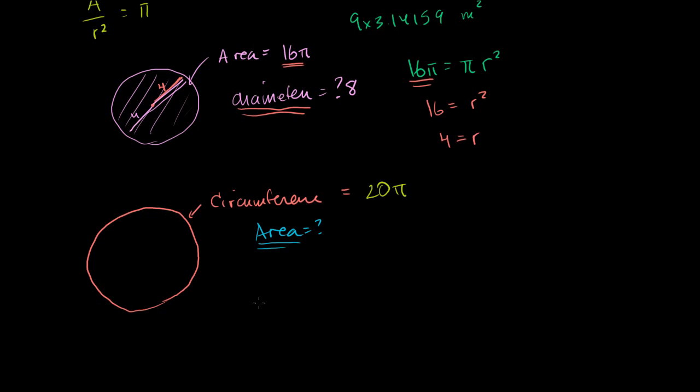Well, we saw in the last video that the circumference is equal to 2 pi times the radius. So if the circumference is equal to 20 pi, we could write that 20 pi, is the circumference, is equal to 2 pi times the radius. Now, if you divide both sides of this by pi, those cancel out. And then if you divide both sides by 2, this becomes a 1, this becomes a 10. Or you get the radius is equal to 10. Which makes sense, right? 2 pi times 10 is going to be equal to 20 pi.